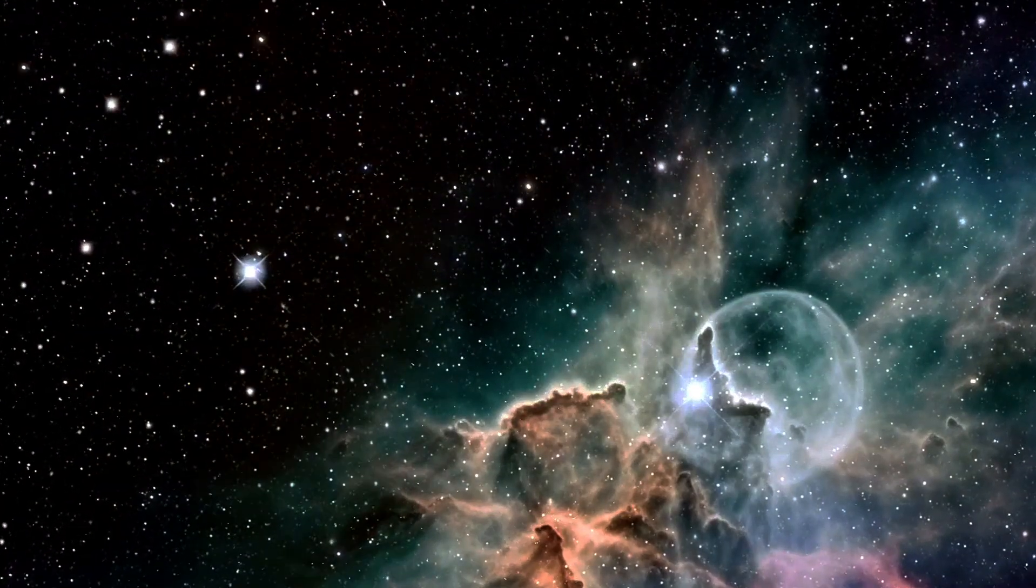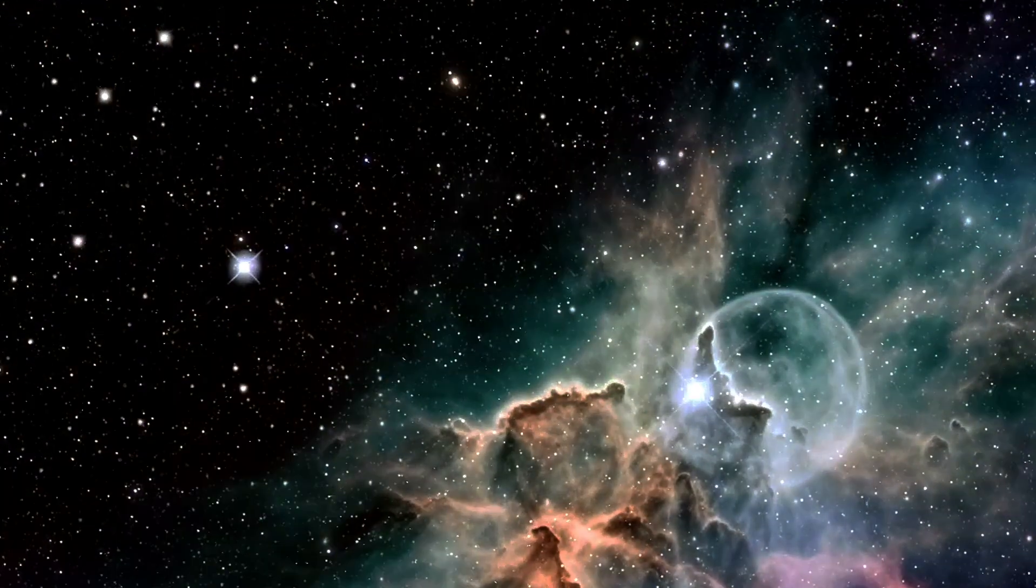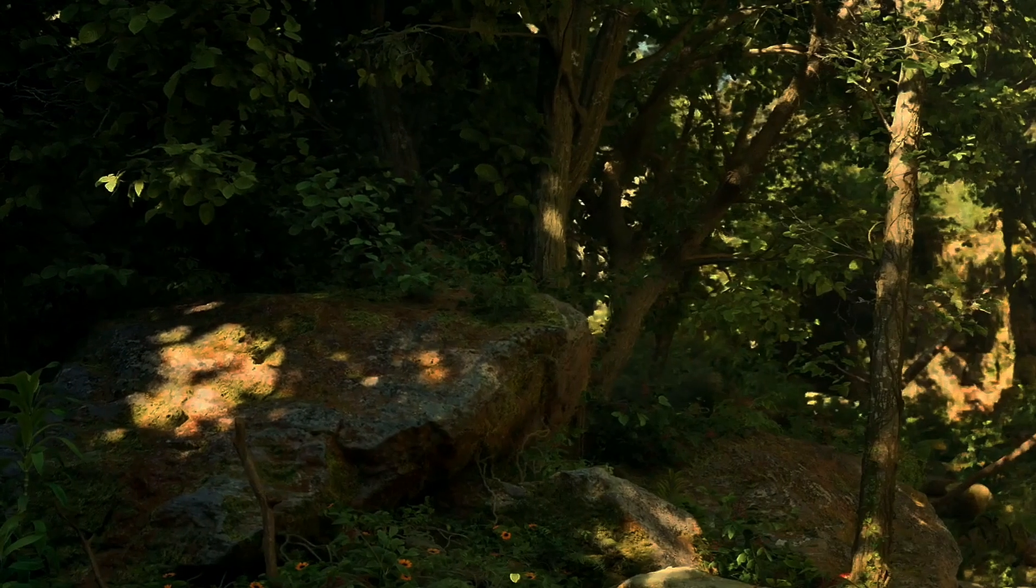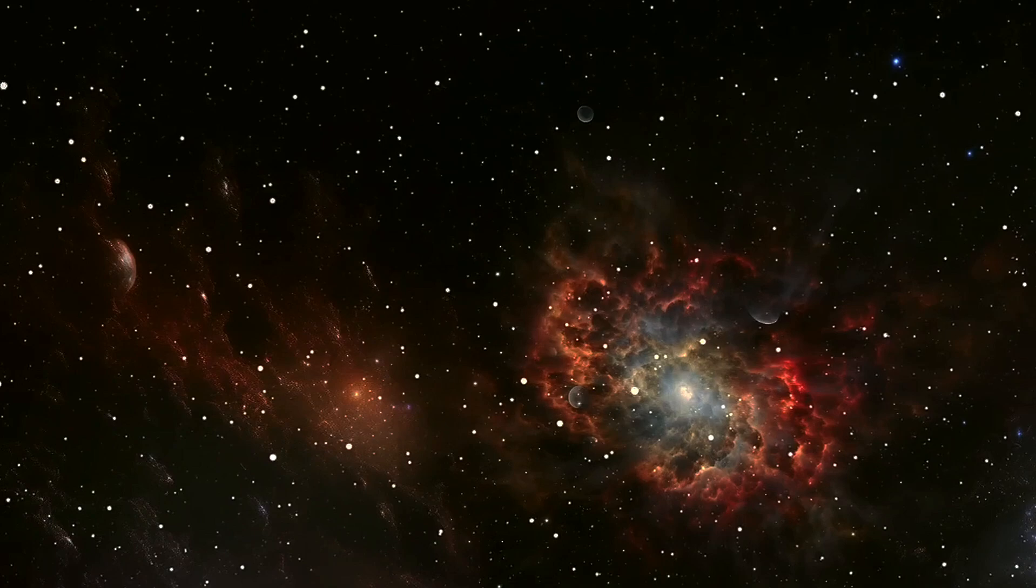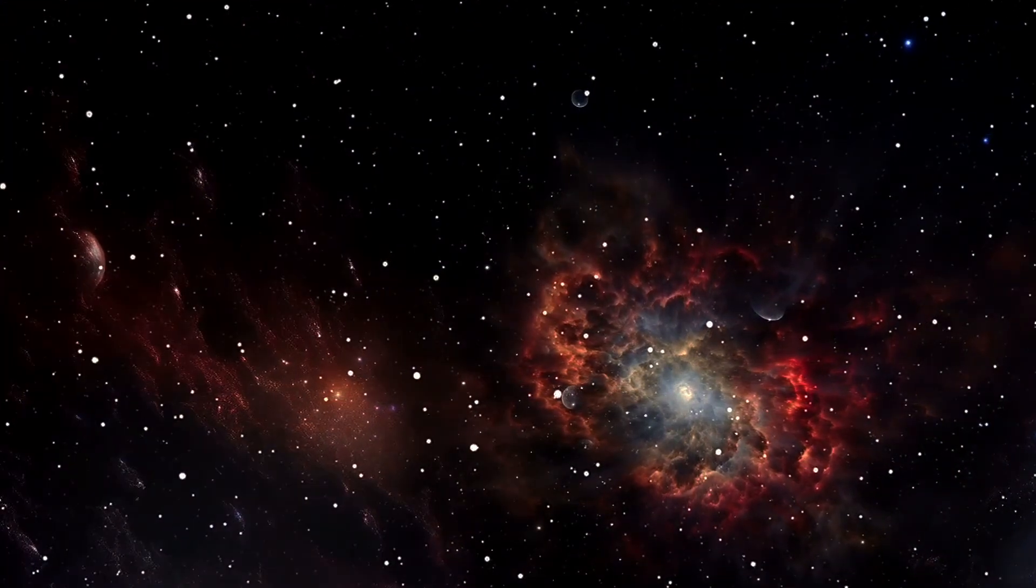Why is our universe the precise way it is rather than any other way we could have imagined? There are only three things that make it so: the laws of nature themselves, the fundamental constants governing reality, and the initial conditions that our universe was born with.